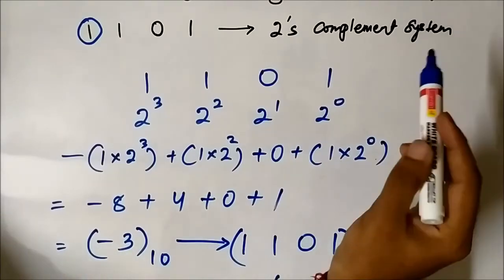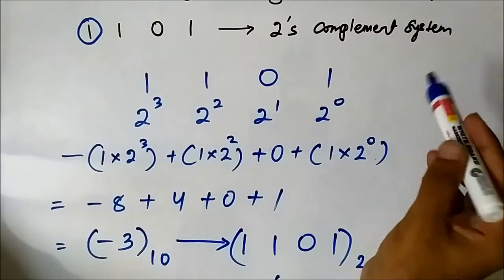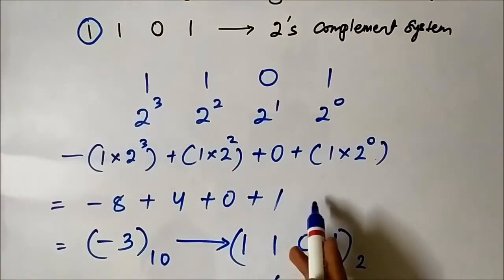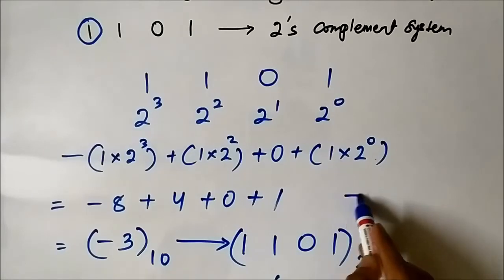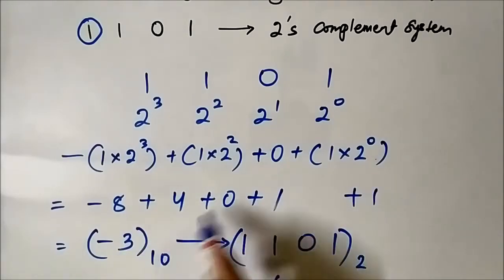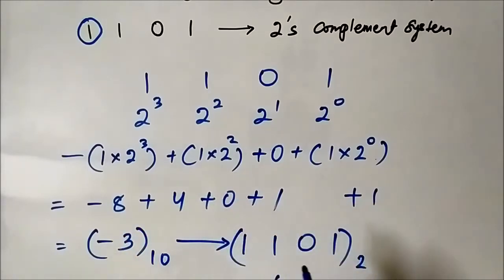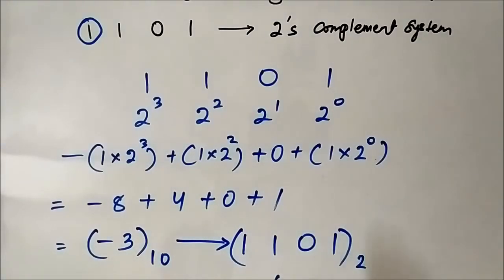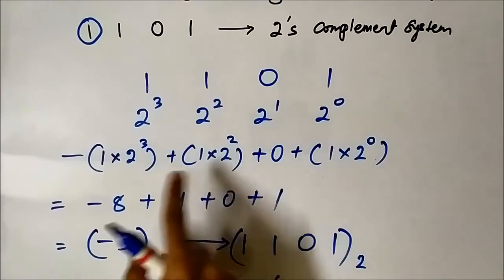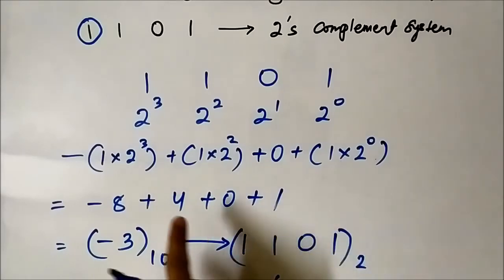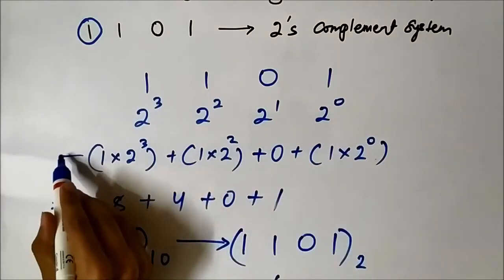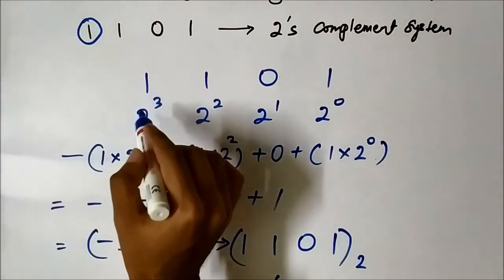An important difference between the 1s complement procedure and the 2s complement conversion is that in 1s complement, we had to add a plus 1 to the result. But here in 2s complement, we directly get the result — there is no need to add 1 to the sum of weights expression. We only include a negative sign to the MSB bit weight position.